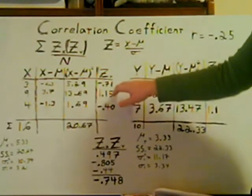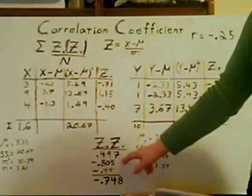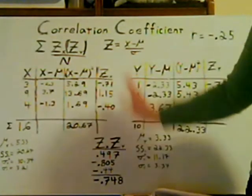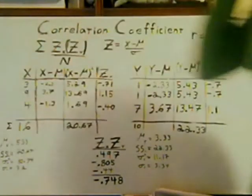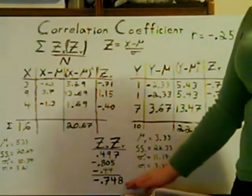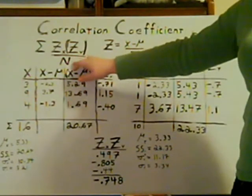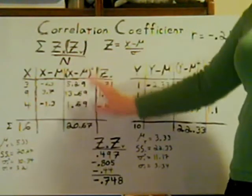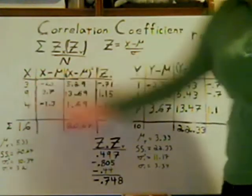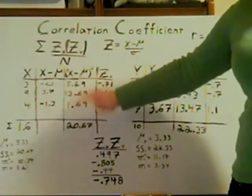So it would be negative .71 times negative .7, which gives us .497. You do that for all the cases or people, then add all that together because of the sigma. When you add it all together you should get negative .748. Never forget the n — and the n here is not the number of data points, it is the number of cases. Our n is not six because we have six points of data, but three because there are three different people: Bob, Susie, and Leroy.